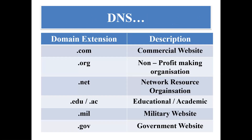Our last slide of today's session covers DNS domain extensions. Here I have mentioned some extensions and their descriptions: .com refers to commercial websites, .org means non-profit making organizations, .net means it is used as a network resource organization, .edu or .ac means educational or academic websites, .mil means military websites, and .gov means government websites.